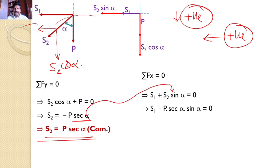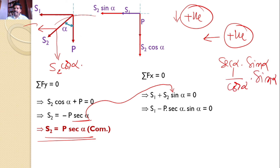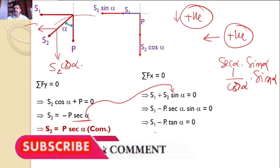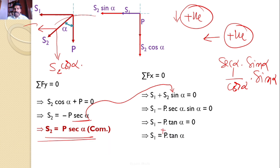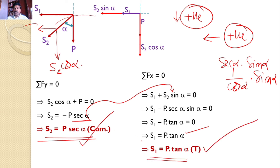Now consider ΣFx = 0, taking leftward as positive since both x-axis forces act to the left. The equation gives S1 + S2 sin α = 0. Substituting S2 = −P sec α: S1 − P sec α · sin α = 0. Since sec α · sin α = sin α / cos α = tan α, we get S1 = P tan α, which is positive — confirming the assumed tensile direction is correct. Hence S1 = P tan α tensile. These are the final answers.